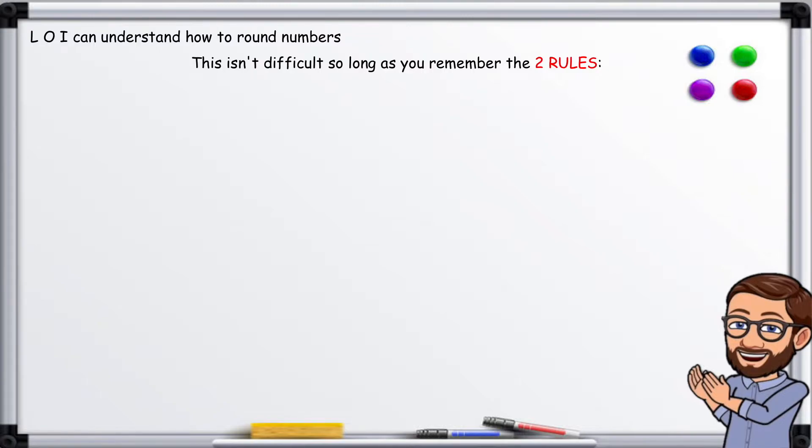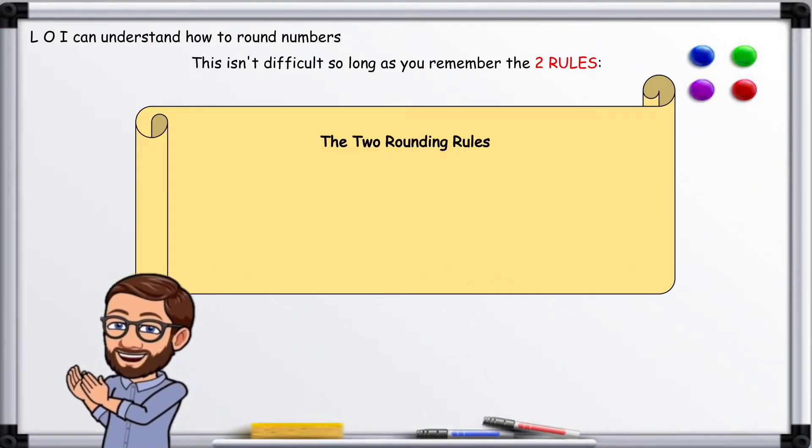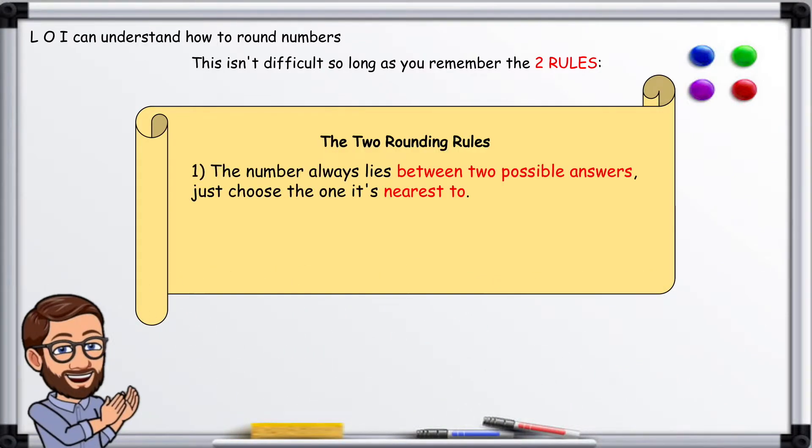This isn't difficult so long as you remember the two rules. The two rounding rules. One: the number always lies between two possible answers. Just choose the one it's nearest to.